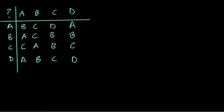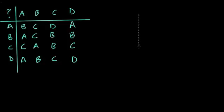We can actually define operations by using a table. Here's our table and here's the operation — it's the question mark. This is a binary operation. If you think of multiplication, multiplication is one of the binary operations you use all the time. It's a binary operation because it operates on two elements or two things at the same exact time.